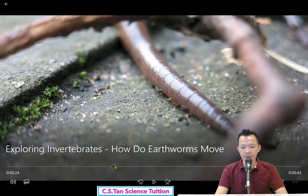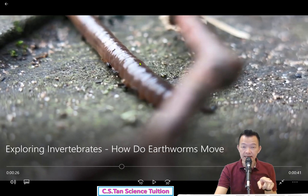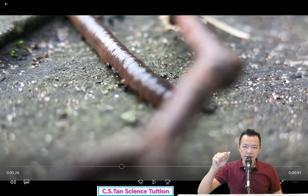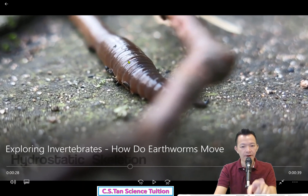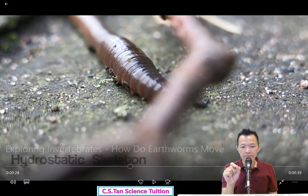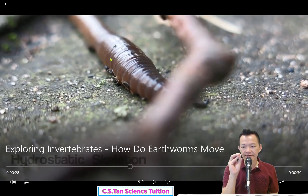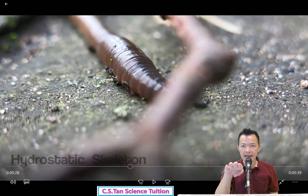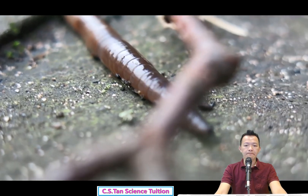As seen in the video: when the circular muscle contracts and the longitudinal muscle relaxes, the body becomes thinner and longer and moves forward. The setae anchor to the ground. When the circular muscle relaxes and the longitudinal muscle contracts, the body becomes thicker and shorter, and the posterior segment moves forward. This is called the hydrostatic skeleton — a cavity filled with coelomic fluid that runs the whole length of the body.